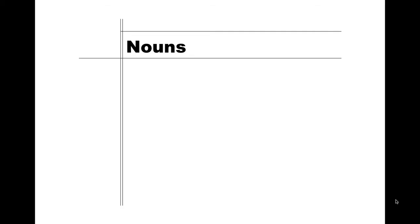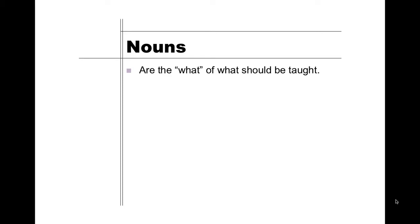Usually when we look at content standards, we focus on the nouns — the nouns are the 'what' of what should be taught. This could be skills, content, facts, or topics. This is the meat of what students are supposed to leave having mastered if they understand the content standard.